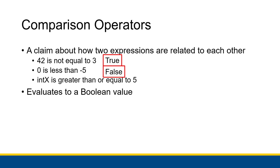I can also tell Visual Basic 'int x is greater than or equal to 5.' Visual Basic can evaluate that claim and tell me whether it's true or false. When we're just looking at this claim, we don't know whether it's true or false because we don't know what value is contained within int x. This will likely be the case when you're programming as well — you don't necessarily know what values are going to be in your variables, because they hold different values depending on how the user has interacted with the program.